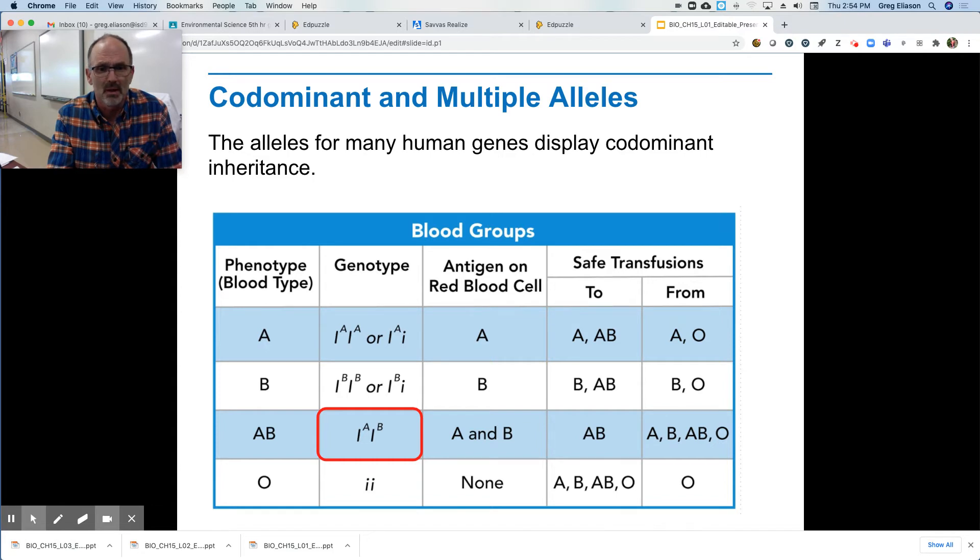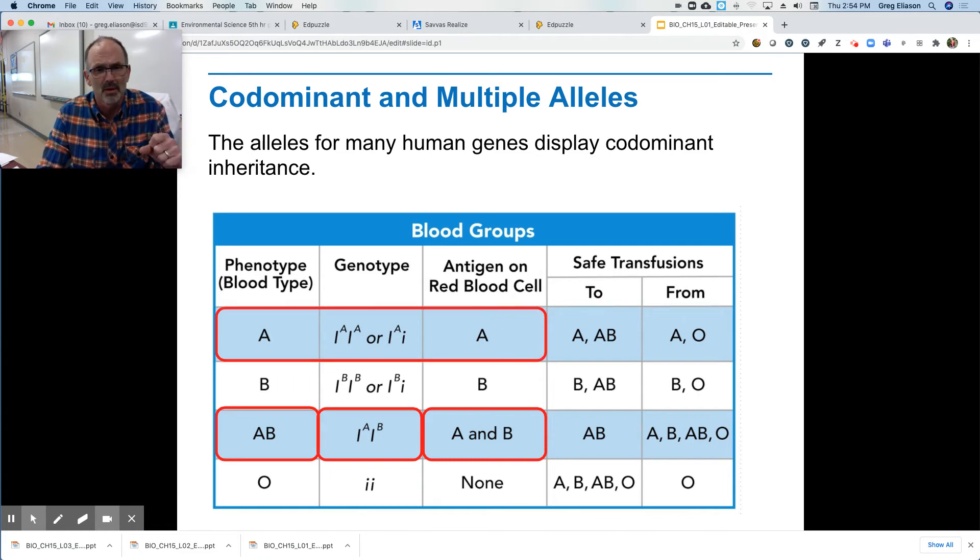So A and B, again, the genotype is AB. The antigens, which is that presenting protein on the blood cell, is maybe call one an A and one a B, and that makes you an AB blood type, right?